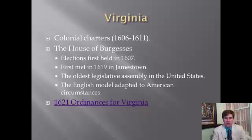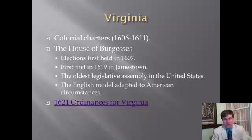Let's start with Virginia. The colonial charter in Virginia was established between 1606 and 1611. The first elections in Virginia were held in 1607. The first meeting of the House of Burgesses was not until 1619 in Jamestown. Virginia has the oldest legislative assembly in the United States, and what you're seeing here is the English model adapted to American circumstances.